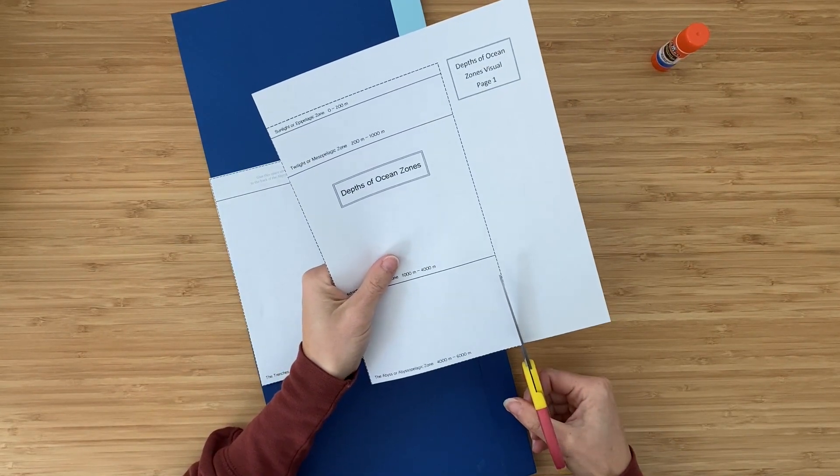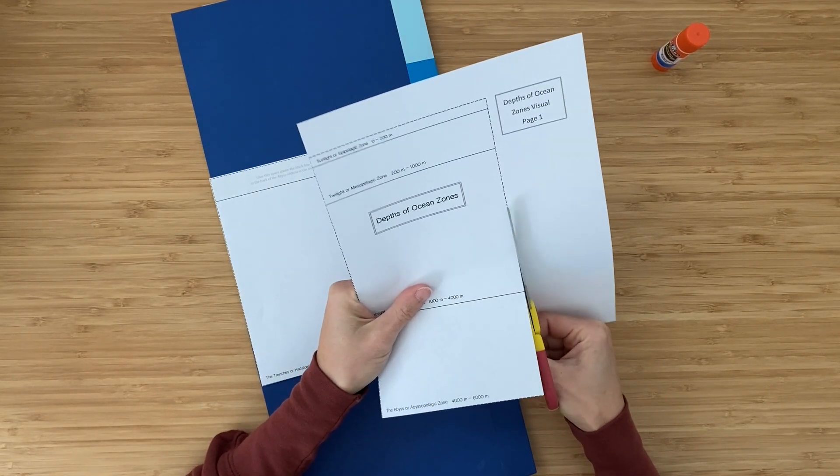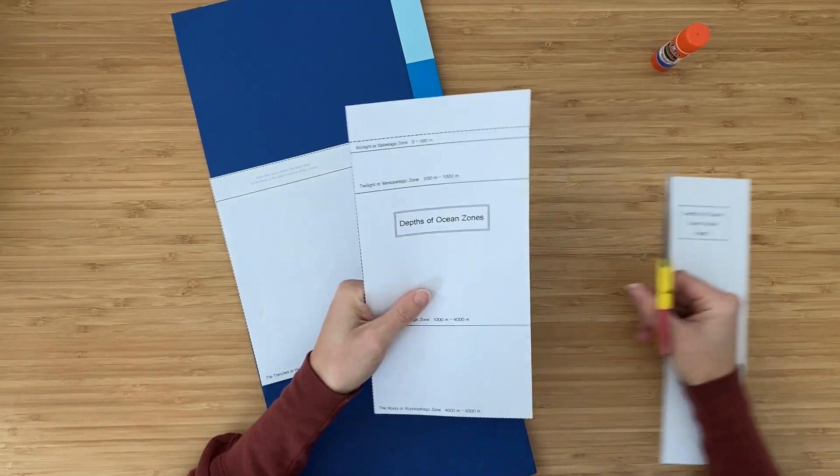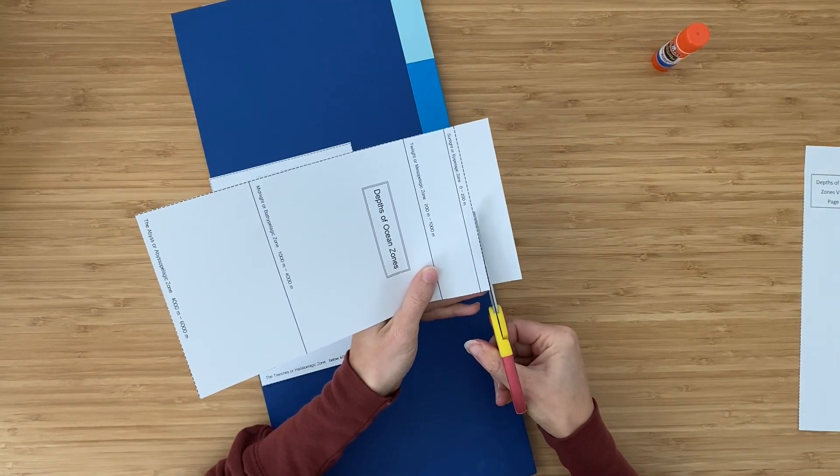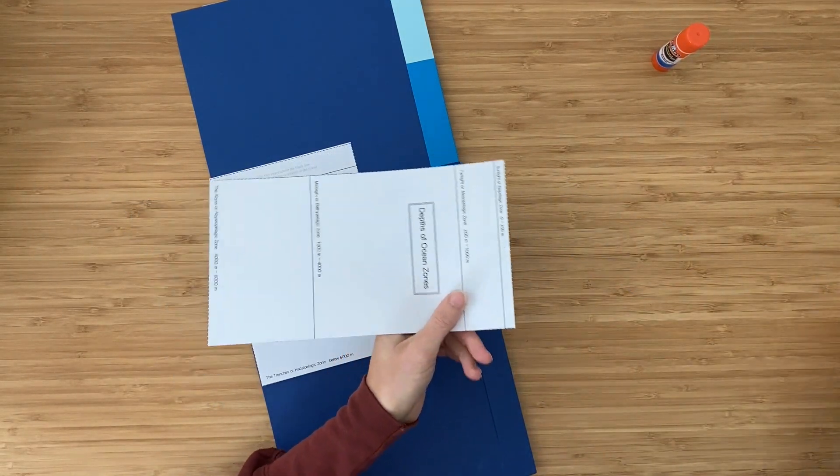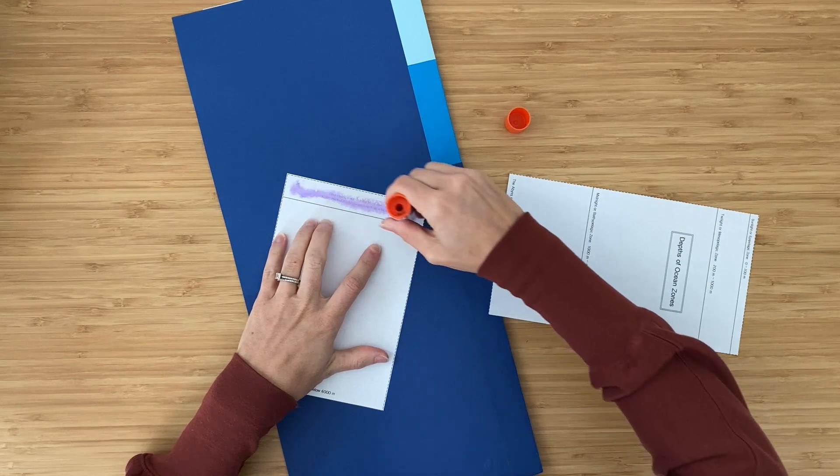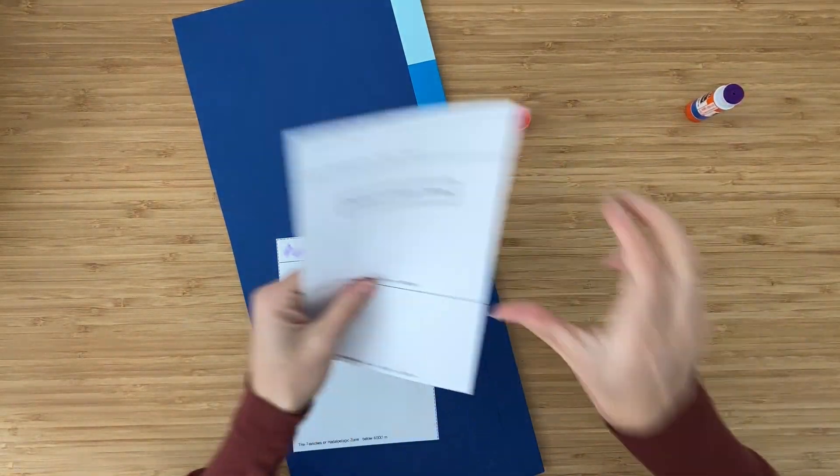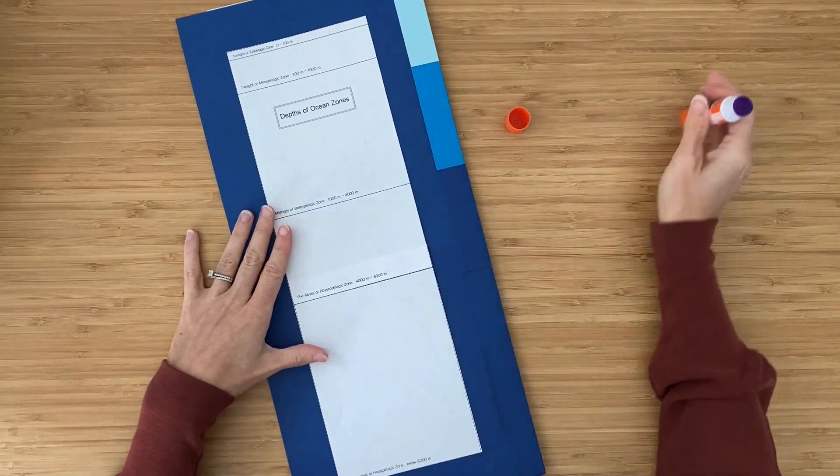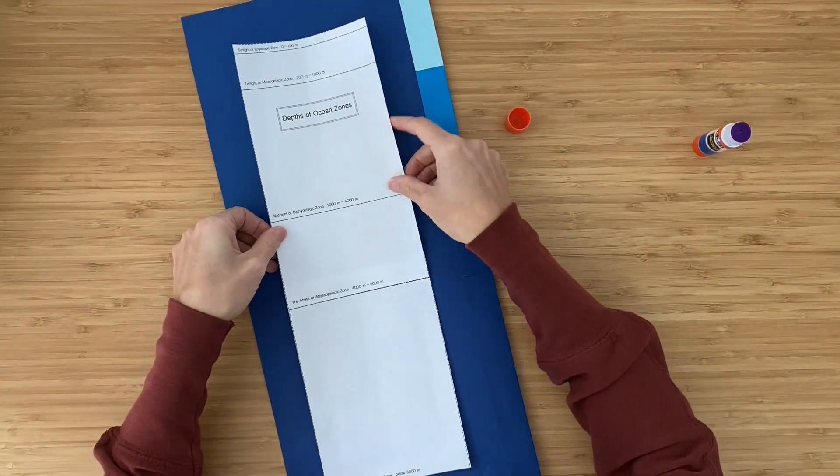When you're putting together this project, it looks as if the ocean zones are all the same size, like the same depth, but in reality they're not at all. So on the back you may want to put this visual that will help you see how different they are. I'm cutting on the black dashed lines around the outside. There are two pages to it. I've already cut out the second one. I'm going to glue this right here, which is my hadal pelagic zone, the trenches, onto the bottom of this other sheet, and then I'm going to glue the whole thing onto the back of my ocean zones project.